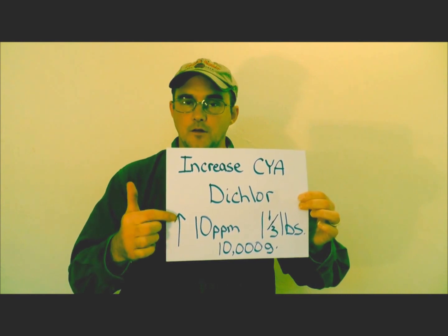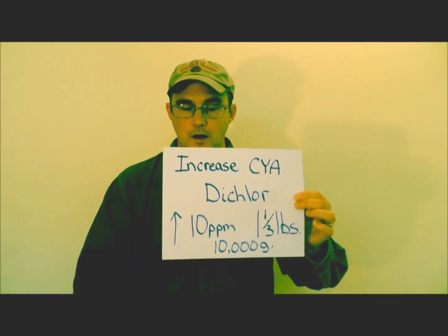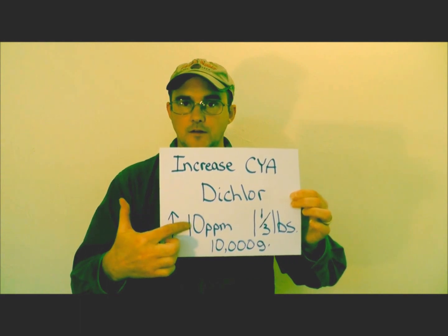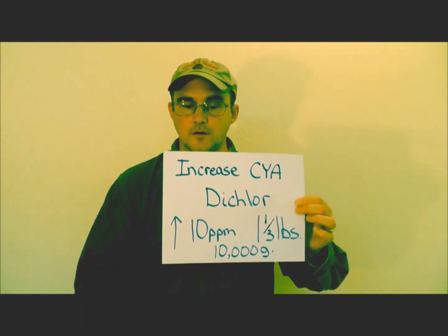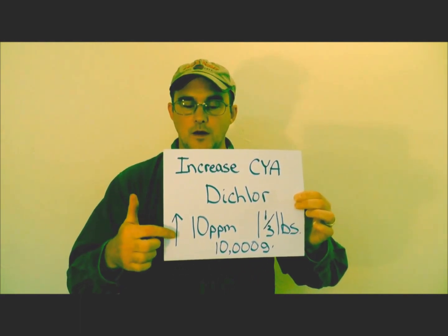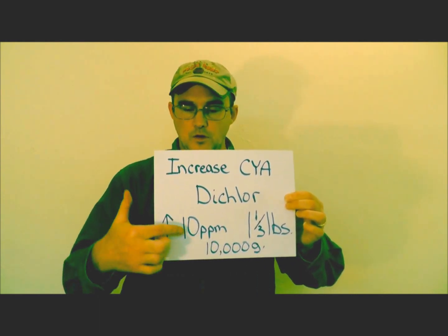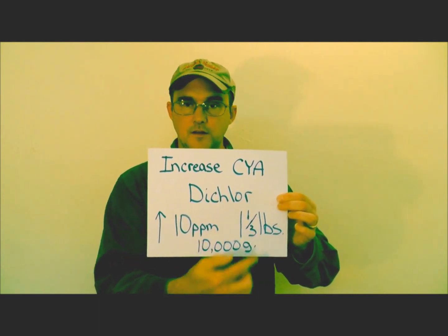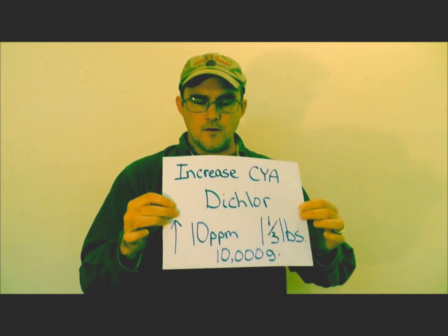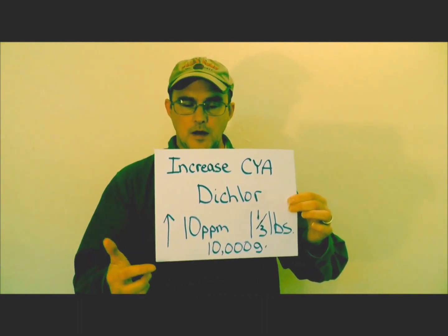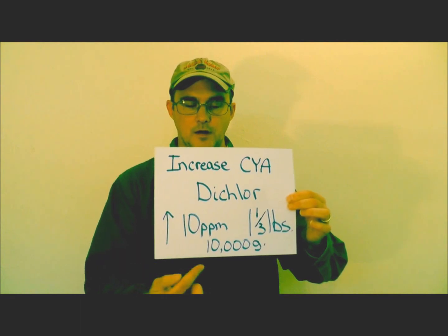If you want to increase your cyanuric acid 20 parts per million, you just double that amount. If you want to increase it 30 parts per million, you triple it. For example, if you want to increase your cyanuric acid 10 parts per million for 20,000 gallons, you've doubled the gallons so you simply double the amount.